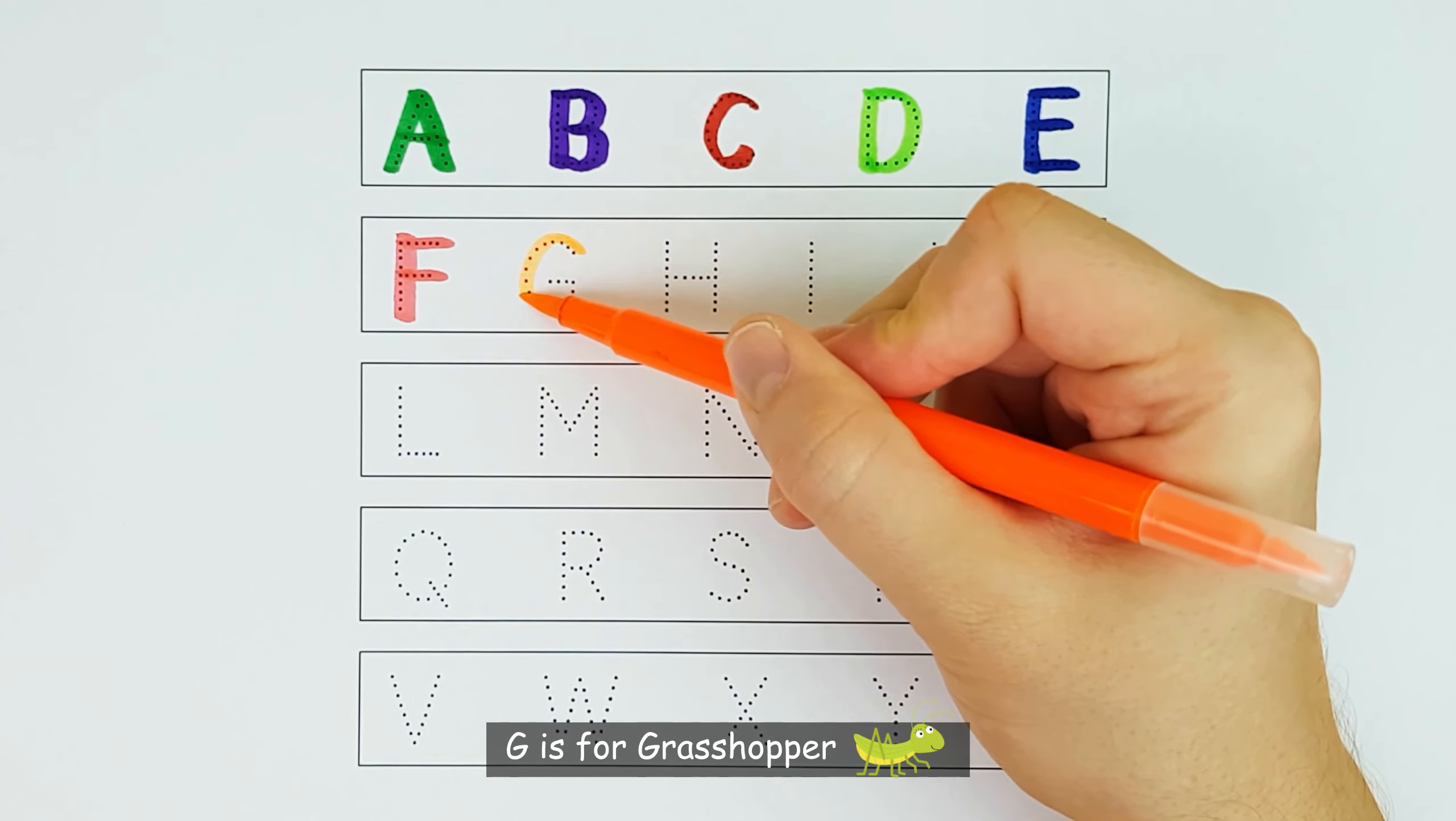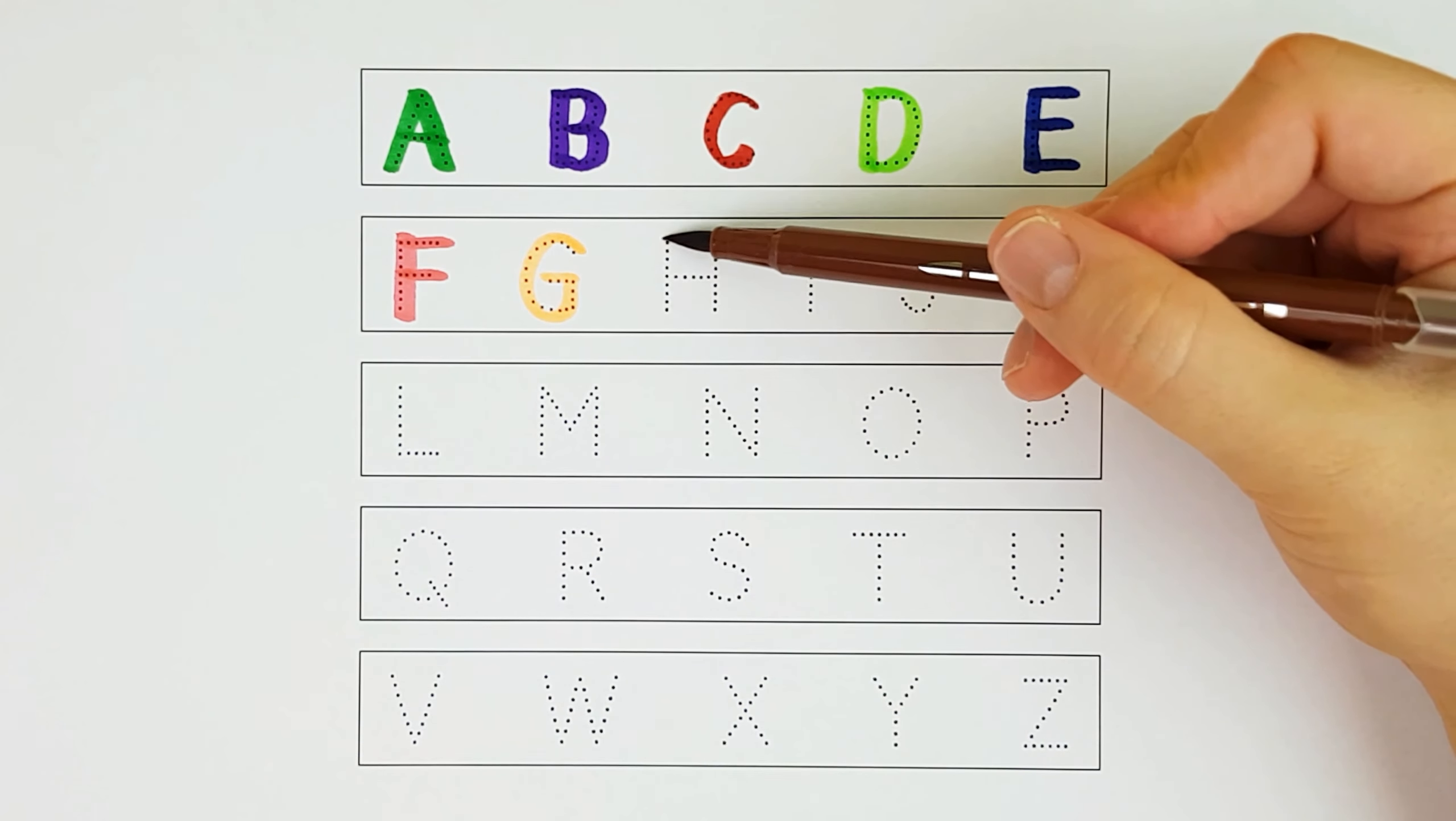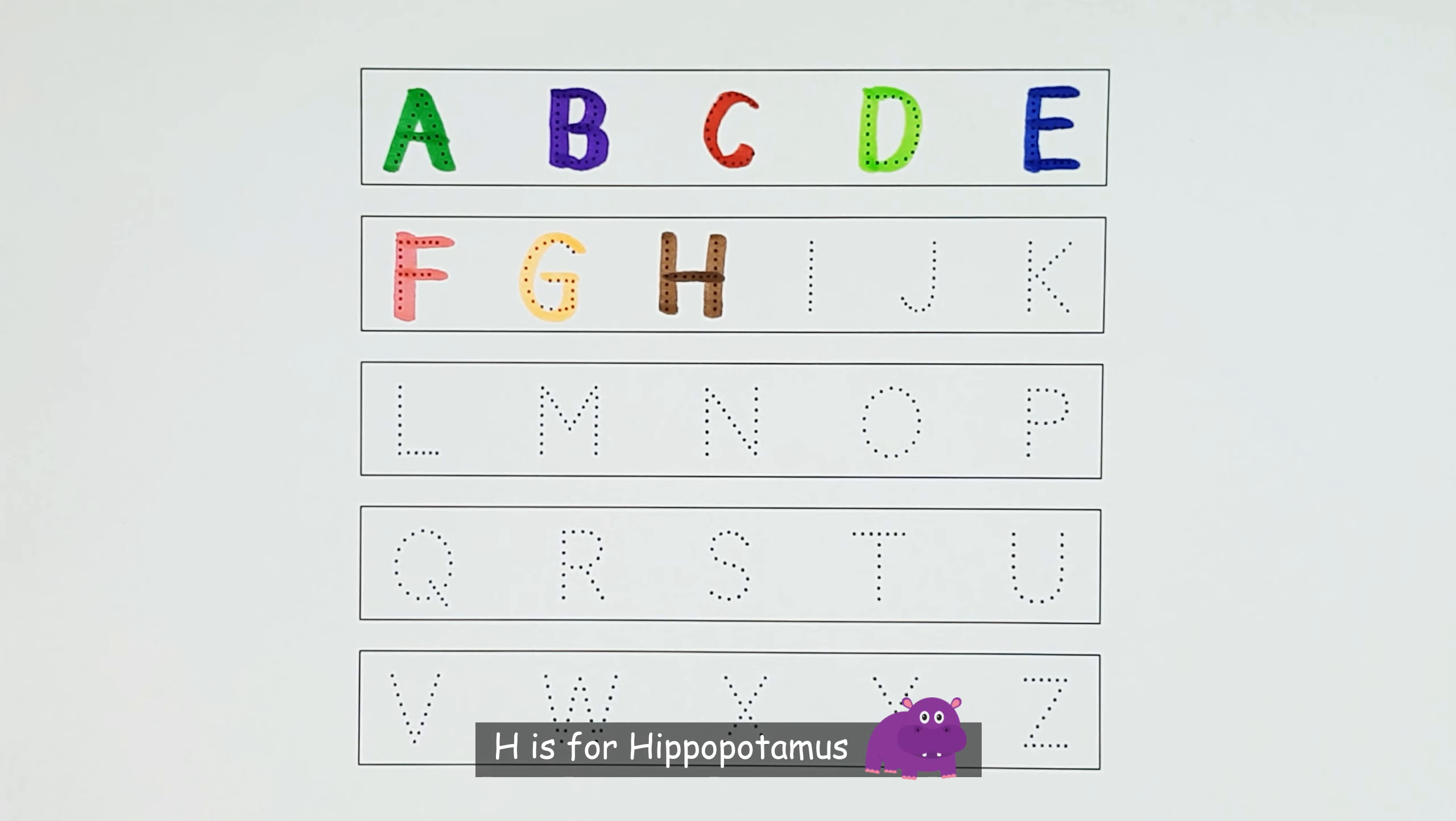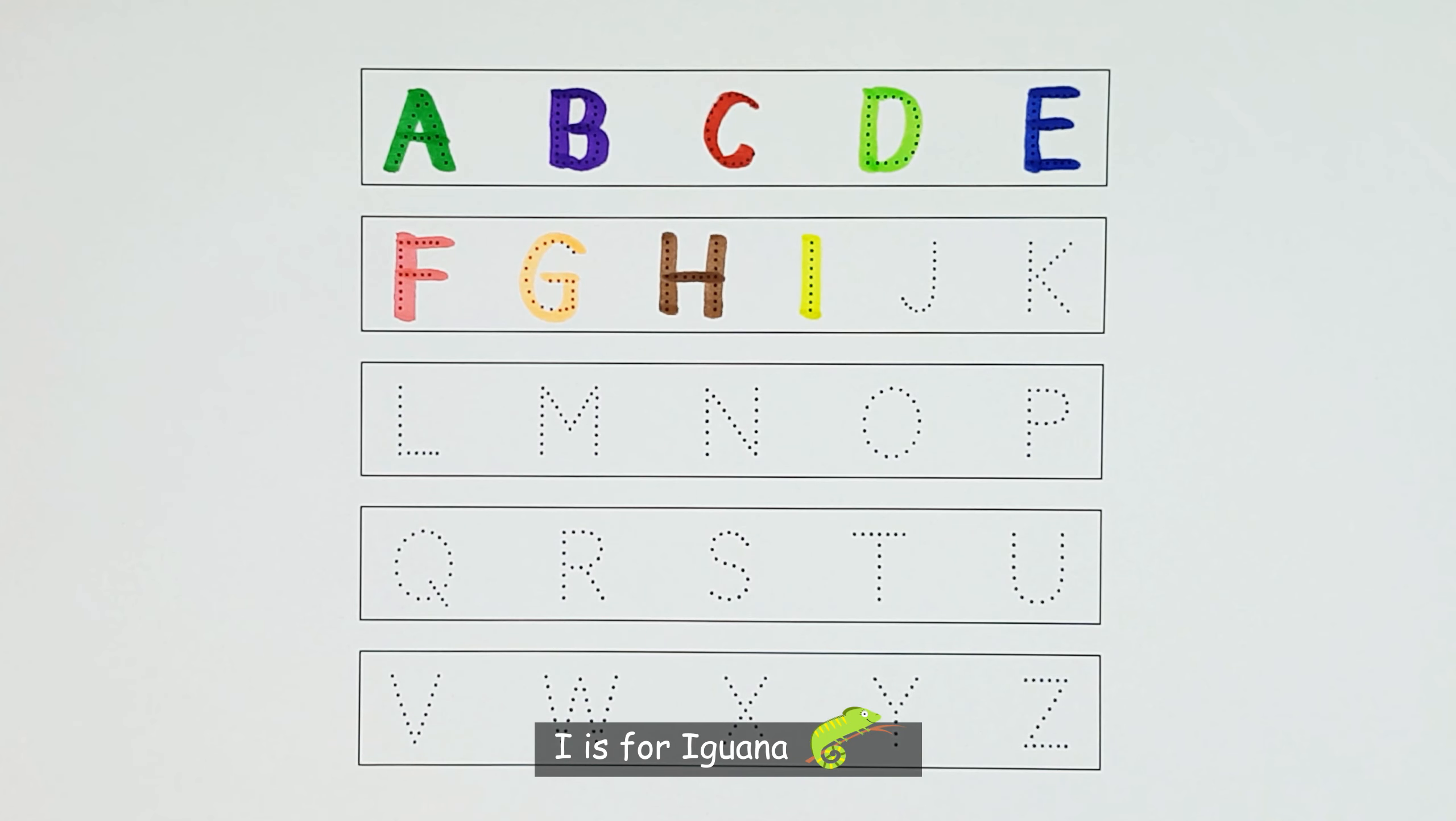G. G is for Grasshopper. H. H is for Hippopotamus. I. I is for Iguana.